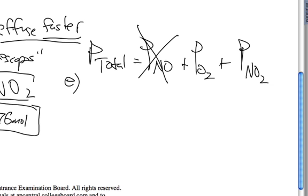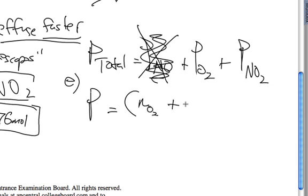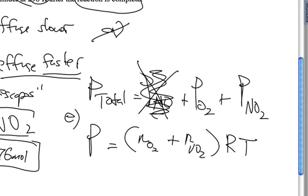So in terms of the total pressure left, you don't have any more NO, you used up all of that. So it's going to be pressure O2 plus pressure NO2. So we can use the old equation that we did in part A, which said that P equaled N for O2 plus N for NO2 times RT, since they have the same temperature, and they're actually in a 5-liter container. So you're going to plug.